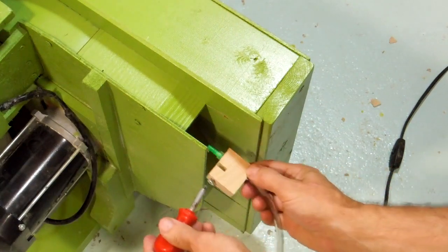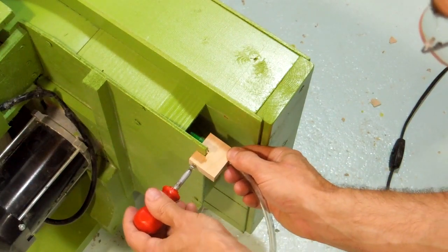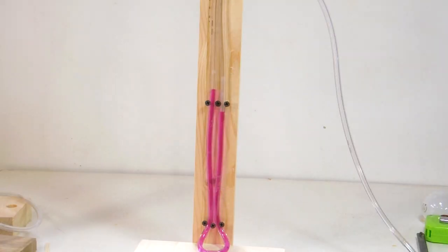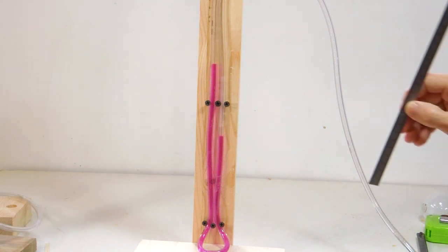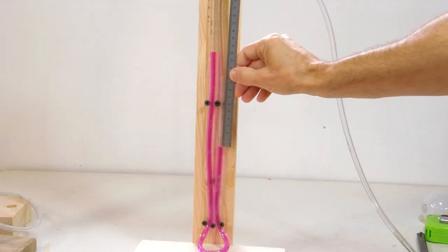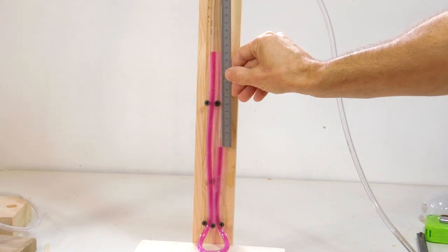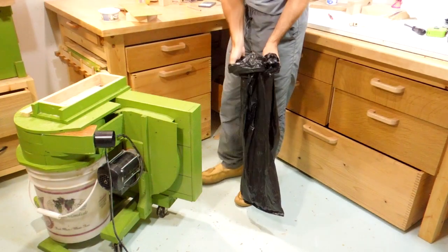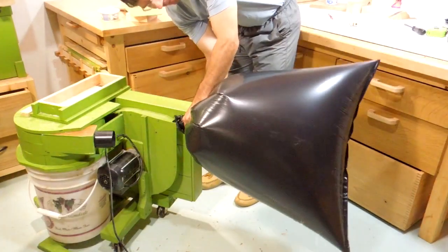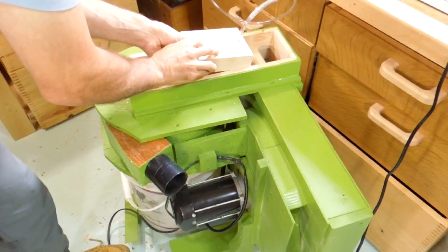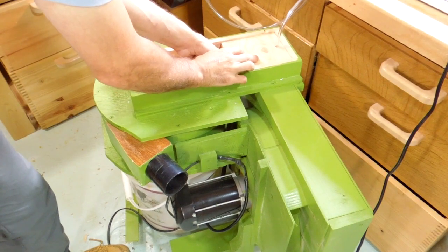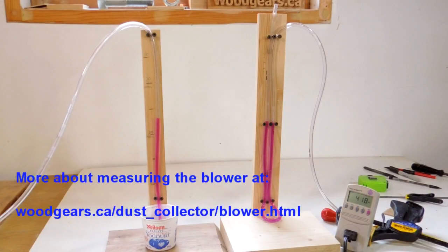I used a pitot tube to measure the air speed. I got 132 millimeters head of water, which works out to about 46 meters per second on the outlet, or about 167 kilometers per hour. That works out to about 35 liters per second or 120 CFM of air. If I completely block the intake, static suction is about 230 millimeters of water and power consumption drops by about half.